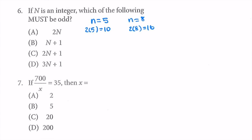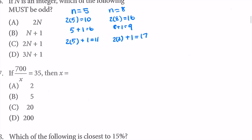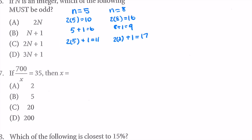For B: n + 1 — 5 + 1 = 6, that's even. 8 + 1 = 9, that's odd. One was odd but not both, so B is not always true. For C: 2n + 1 — 2 times 5 is 10, plus 1 equals 11, that's odd. 2 times 8 is 16, plus 1 equals 17, also odd. The mathematical reason: when you multiply any number — odd or even — by 2, you always get an even number. Then adding 1 to an even number always gives an odd number. So C is always true.